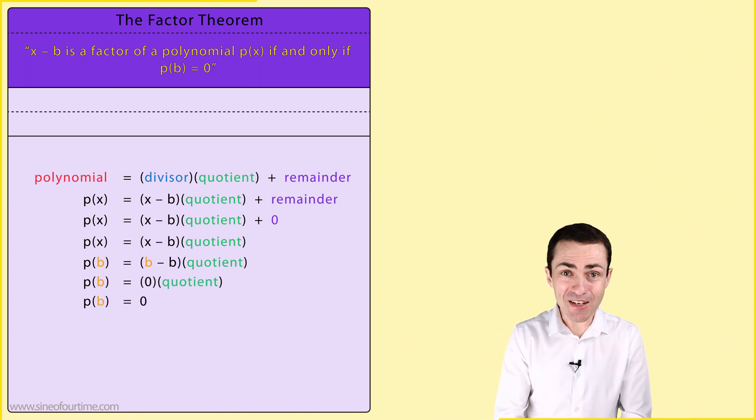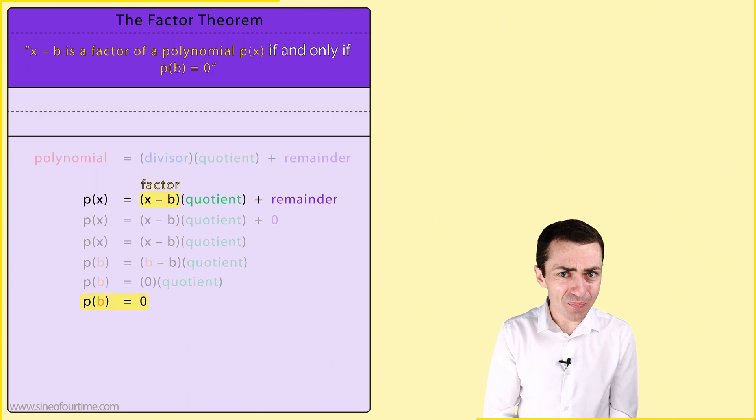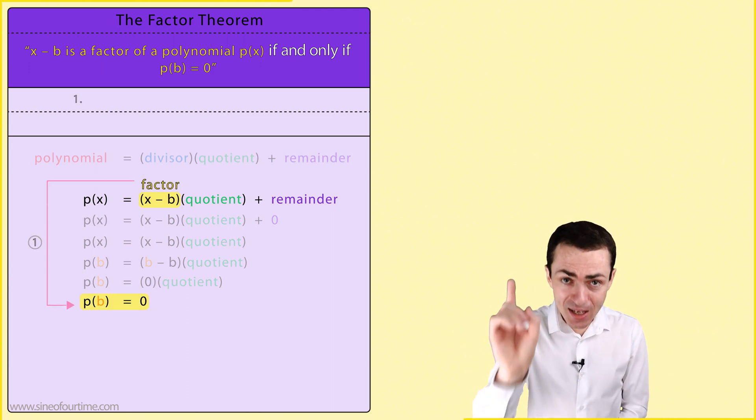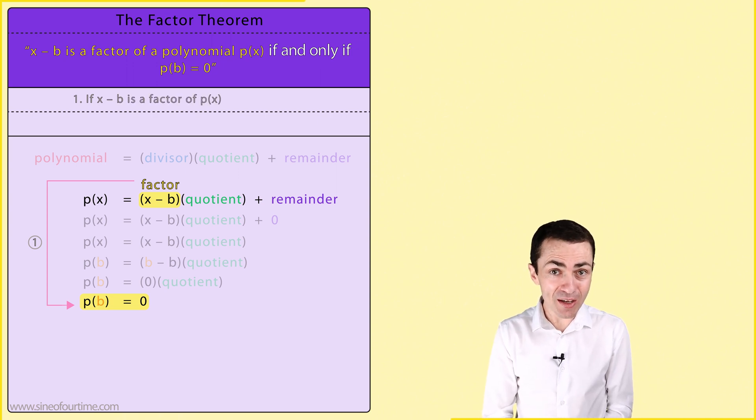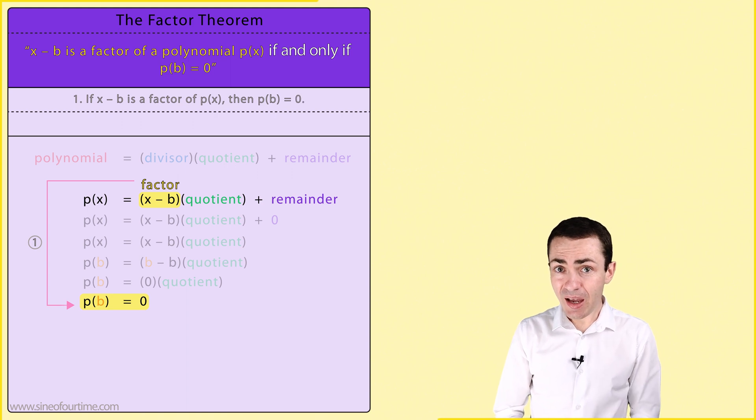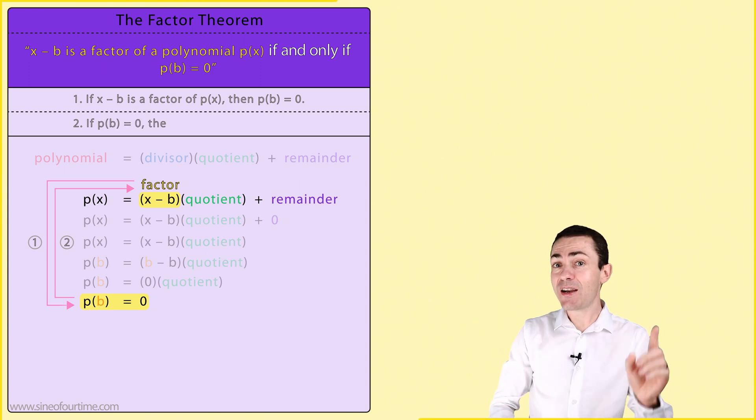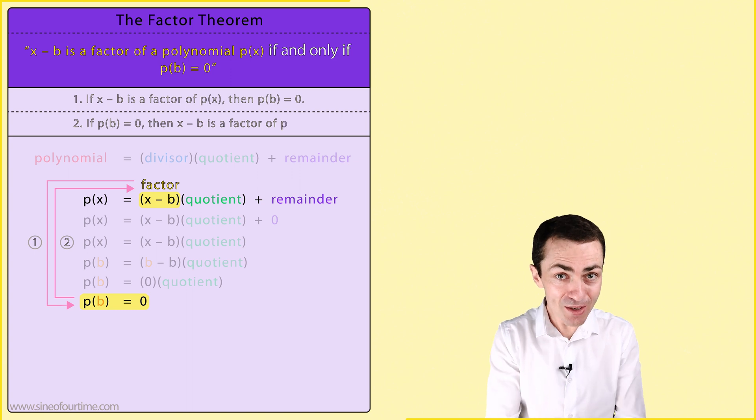In summary, this result works both ways thanks to that if and only if statement that is used in logic. Working forwards, we can conclude that if x minus b is a factor of polynomial p(x), then p(b) is equal to 0. And working backwards, we can conclude that if p(b) is equal to 0, then x minus b must be a factor of that polynomial p(x).